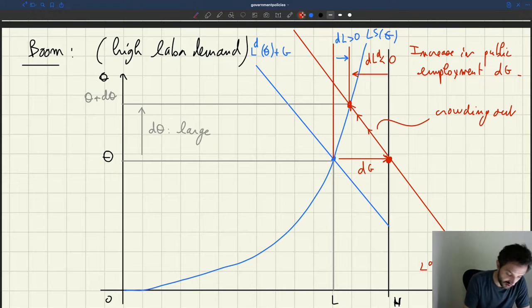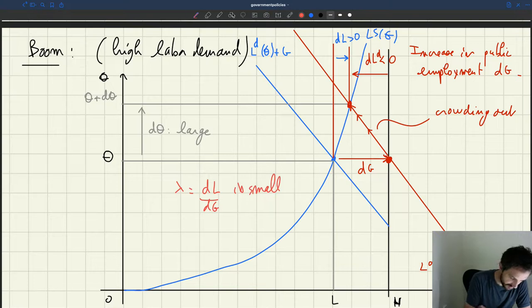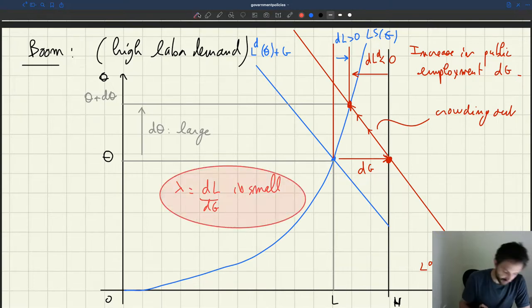So the net effect is that the increase in total employment is not very big as we see here. And so the conclusion from this is that in good times, the multiplier lambda, which is dL/dG, is small. That's the conclusion.